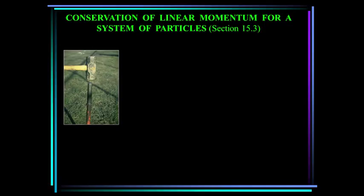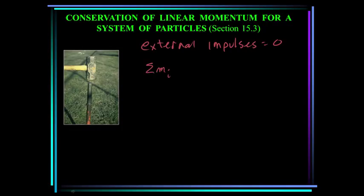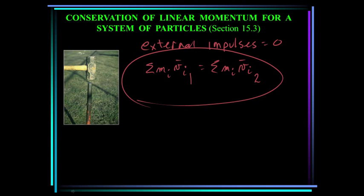A special case: when the sum of external impulses acting on a system of objects is zero, the linear impulse-momentum equation reduces to the conservation of linear momentum. Our equation then becomes: the summation of each individual particle's momentum at state one equals the sum of all individual masses times their velocities at state two. If the external impulse is zero — no external forces acting on the system — that is the conservation of linear momentum.